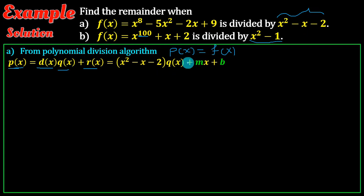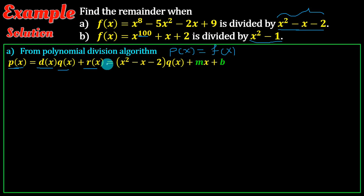Q of x is already unknown. If you have Q of x, the second degree divisor means the remainder is of first degree. We want to factorize. When we factorize, we find the value of x squared minus x minus 2.